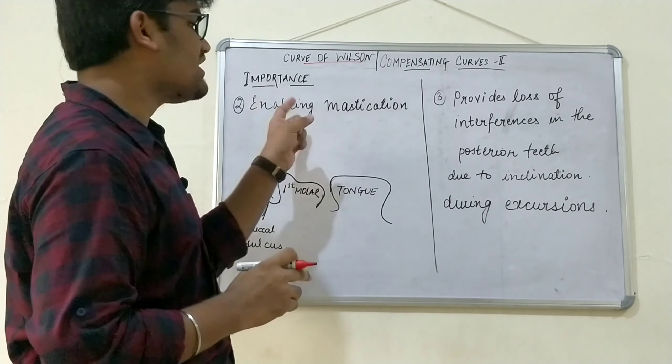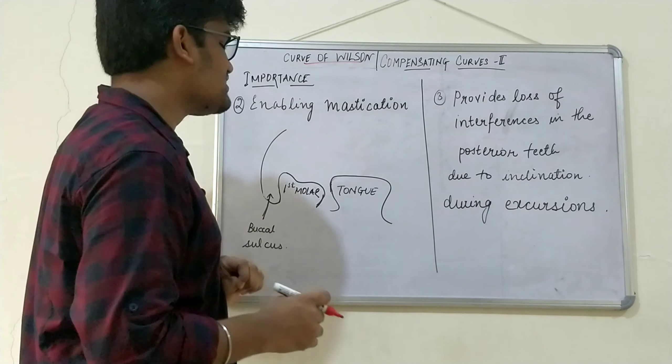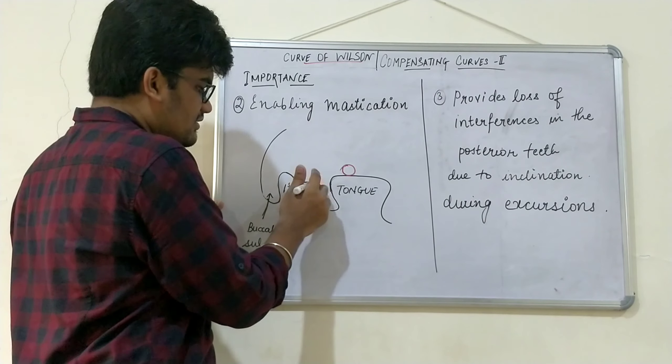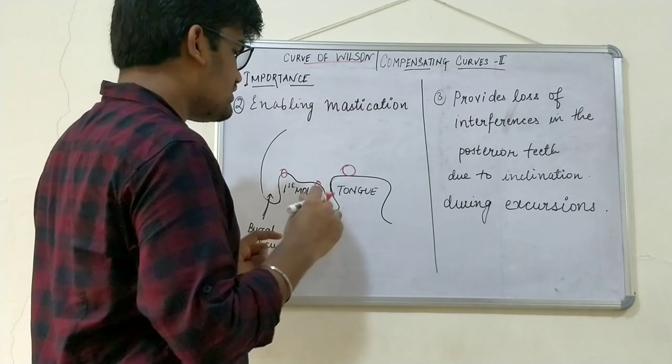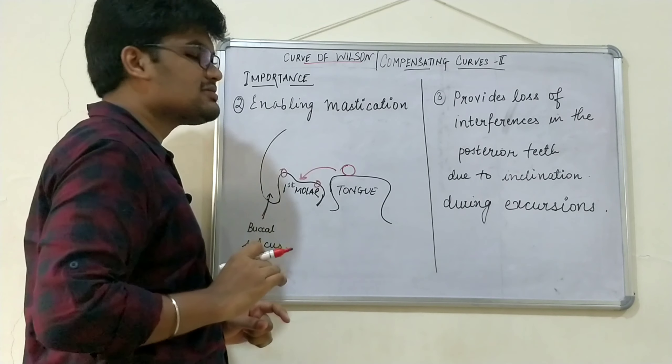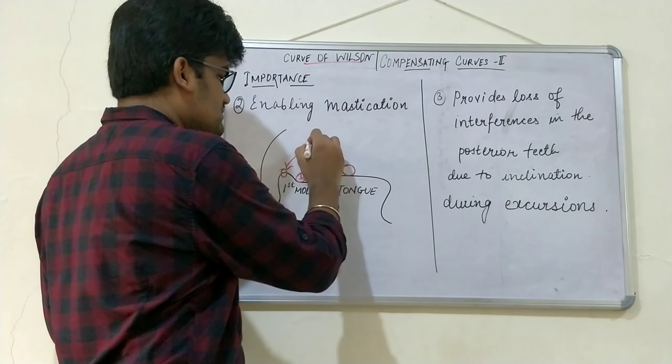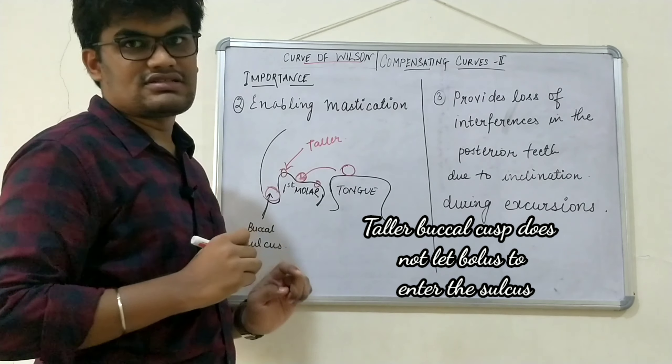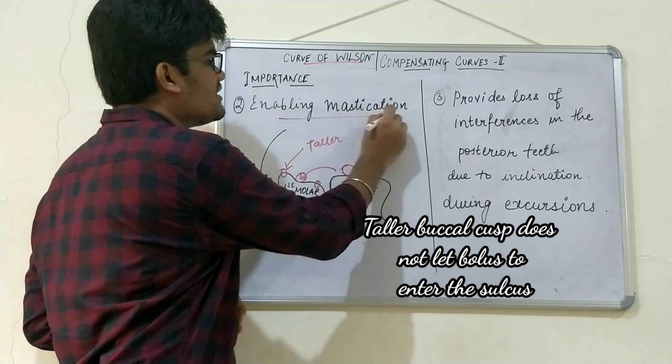Moving on to the second function: enabling mastication of the food. We'll see how this lingual inclination of lower posterior teeth helps in mastication. This is the bolus of the food. Because of the lingual inclination, the lingual cusp seems to be shorter whereas the buccal cusp seems to be taller. During mastication, the tongue can easily pass the food bolus over the occlusal surface as the lingual cusp is shorter. Once the bolus comes over the occlusal surface, the buccal cusp prevents the bolus from getting trapped into the buccal sulcus.